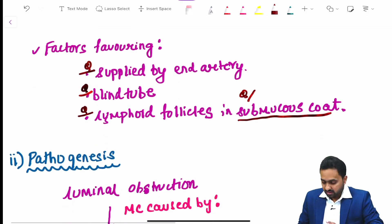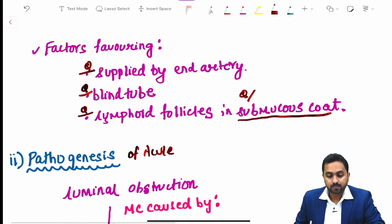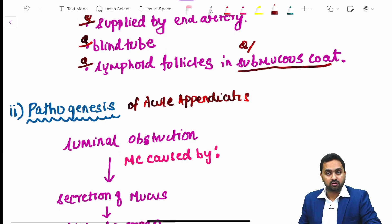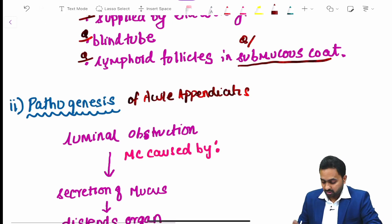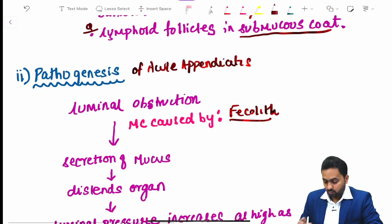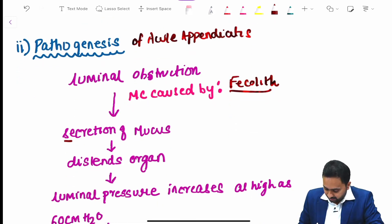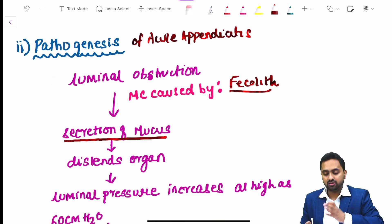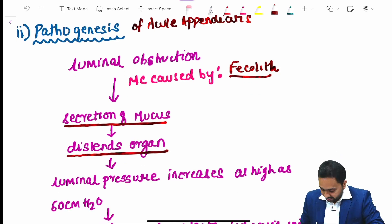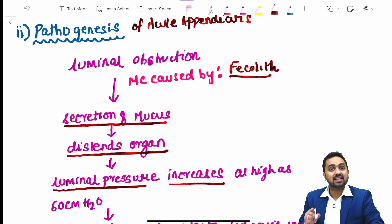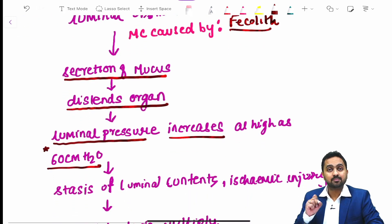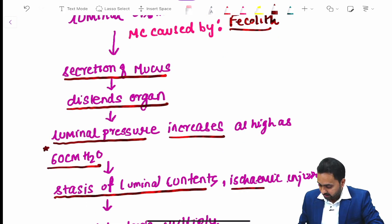Regarding the pathogenesis of acute appendicitis, there is luminal obstruction, the most common cause being a fecalith. Due to this obstruction, mucus is secreted, the organ becomes distended, and the luminal pressure increases as high as 60 centimeters of water.